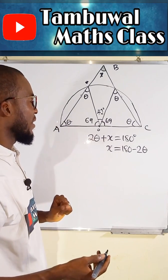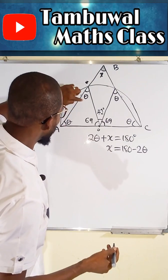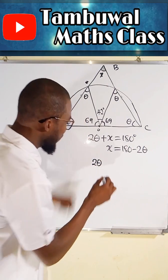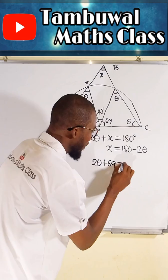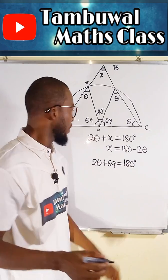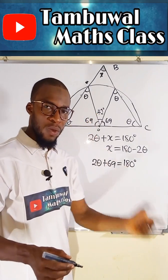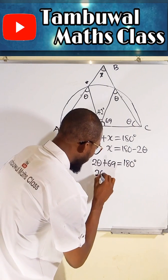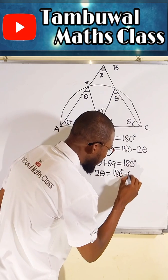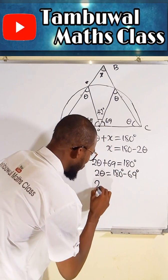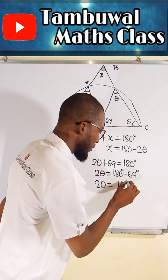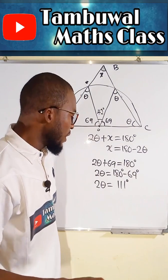We can now use this to find theta, then substitute it back. Theta plus theta is 2 theta, plus 69, equals 180 degrees — because this is also a triangle with angles theta, theta, and 69. So 2 theta is equal to 180 degrees minus 69 degrees, which gives us 2 theta equals 111 degrees.